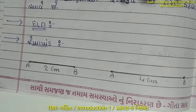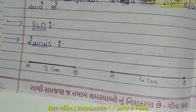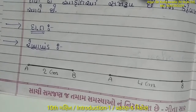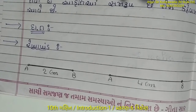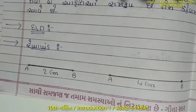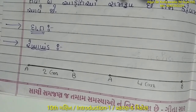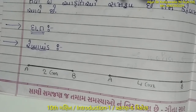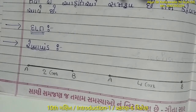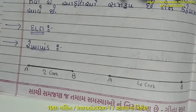અને બંને નું કદ સરખું ન હોય, એટલે કે સમાન ન હોય, તો આપણે એને સમ રૂપ કહીશું. તો વિદ્યાર્થી મિત્રો, હવે આપણે સાધ્ય 6.1 ની શરૂઆત કરીશું. આ ઇન્ટ્રોડક્શન માં કોઈ પણ જગ્યા ખબર ન પડે - કોઈ ટૉપિક - તો મને comment કરો.